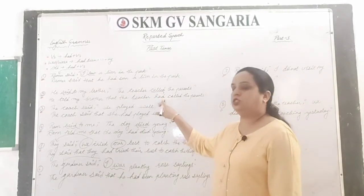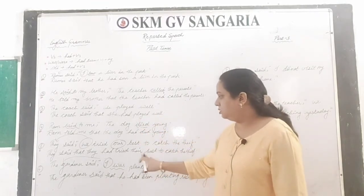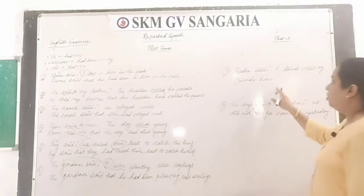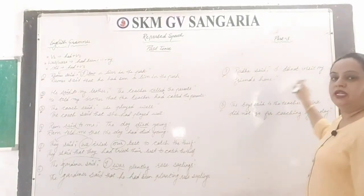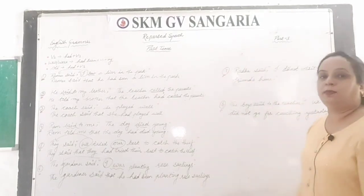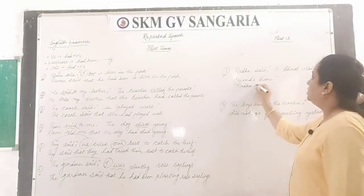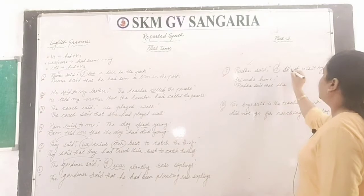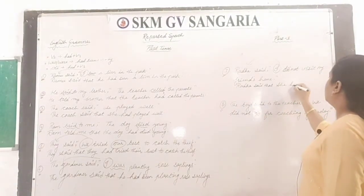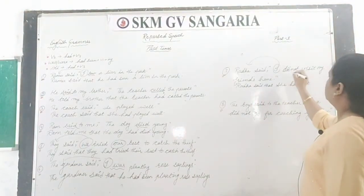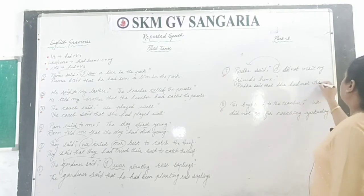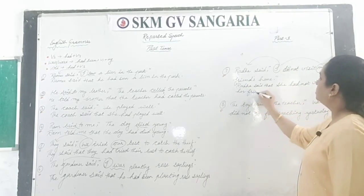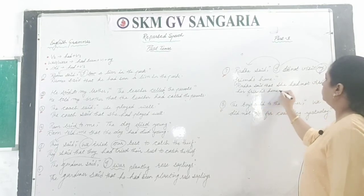Once again: when there is verb second, change to had plus verb third. When there is was/were, change to had been plus verb first plus ing. Radha said, 'I did not visit my home.' Here 'did' changes to had plus verb third, and 'I' changes to 'she'. Answer: Radha said that she had not visited her home.